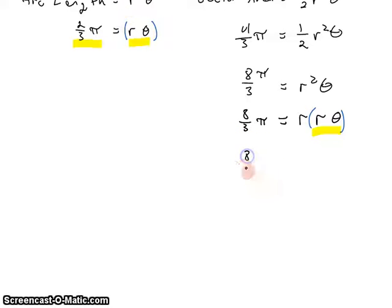So we'll get 8 thirds of pi is equal to R times, not R theta, but 2 thirds of pi. And now we have lots of the same things on both sides of this equation. We have a pi and a pi. We have a division by 3 and a division by 3. When we cancel all that out, we get 8 equals 2 times R. Or R equals 4.